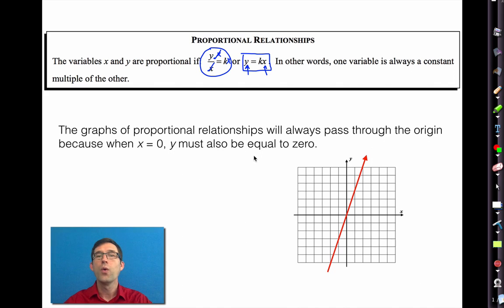Proportional relationships, when we graph them, will always pass through the origin. That makes sense, because if I've got the equation y equals k times x, when x is equal to zero, it doesn't really matter what the proportionality constant is, y will always also be zero. Thus, their graph will pass through the point zero, zero.